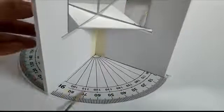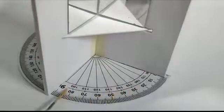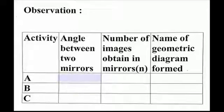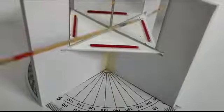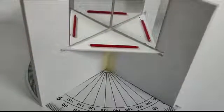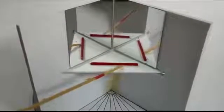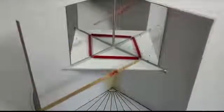Measure the angle between the mirrors and note it down in the given observation table. Count the number of images formed and identify the geometrical figure formed by object and the images. Note down both the observations in the table.